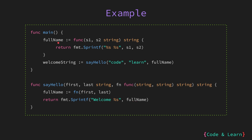In main, we defined fullName which takes two strings as input parameters and returns a string. This satisfies the function signature. Inside the fullName function we format the first and second string as s1 s2. In some places full name is written as last name first, in which case you can reverse the position of s1 and s2. This provides flexibility in how you want to format the full name. Then we call the sayHello function, pass the first and last name and the fullName function, and get a welcome string in return — welcome CodeLearn.